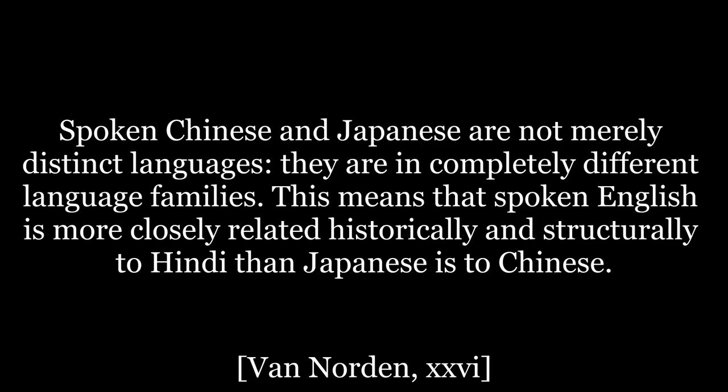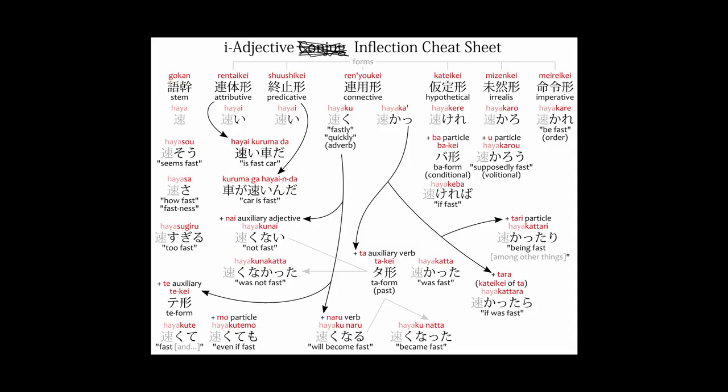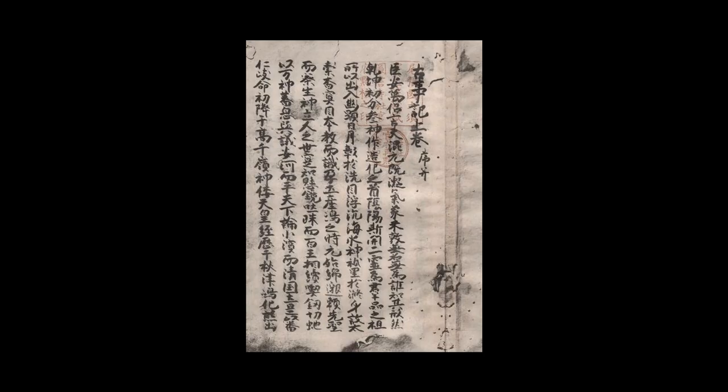As Van Norden says, in speech the difference is clear, as Chinese is largely uninflected — meaning there are few changes to words to express a grammatical function — while Japanese is extremely inflected. But the confusion arises from both languages' written forms, since the Japanese adopted the classical Chinese writing system over a thousand years ago. For a long time, kanbun, a form of classical Chinese, was the written form of many Japanese authors until the mid-20th century.